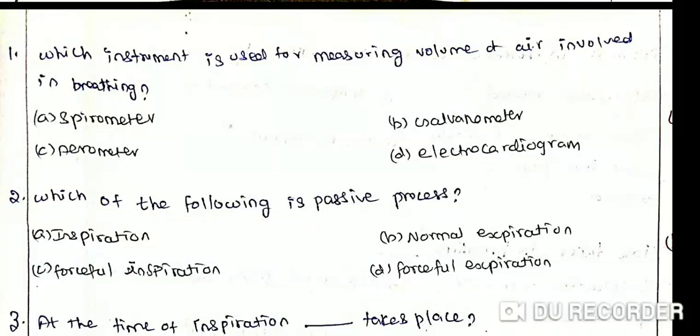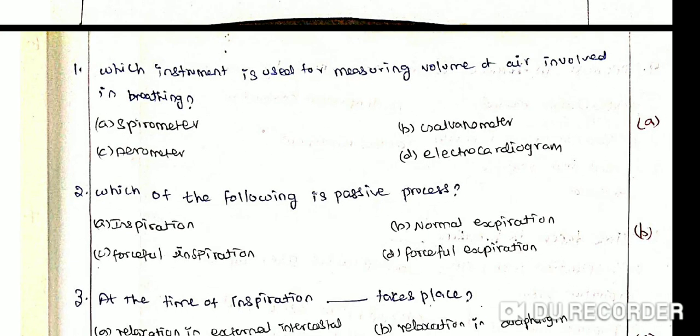Which instrument is used for measuring volume of air involved in breathing? Option A: Spirometer. Option B: Galvanometer. Option C: Aerometer. Option D: Electrocardiogram. The correct answer is Option A: Spirometer.